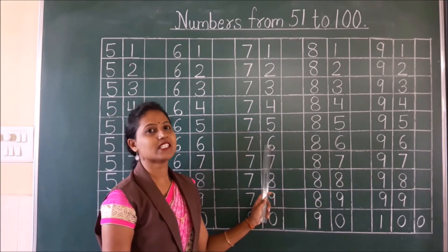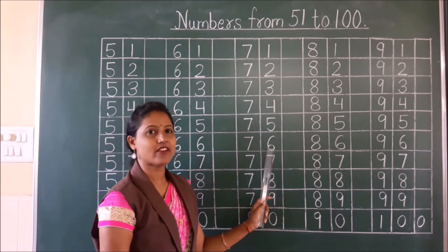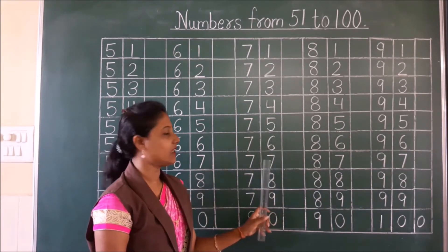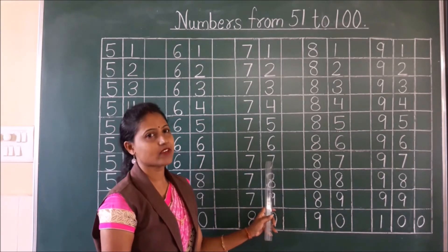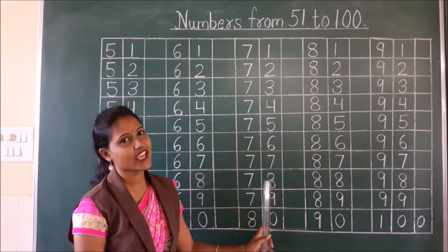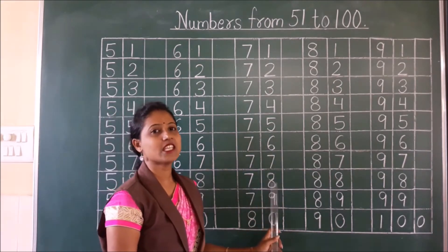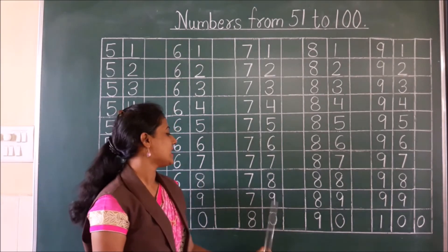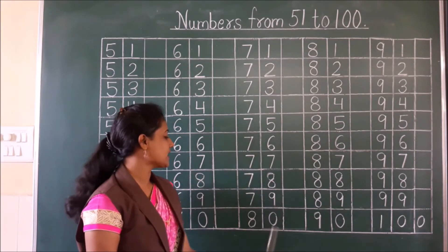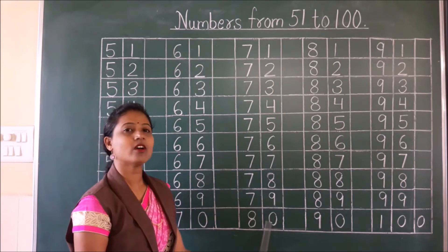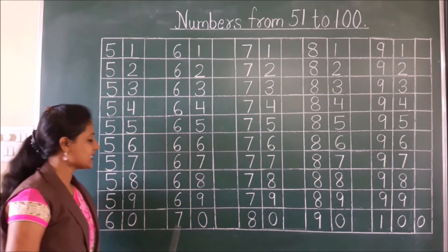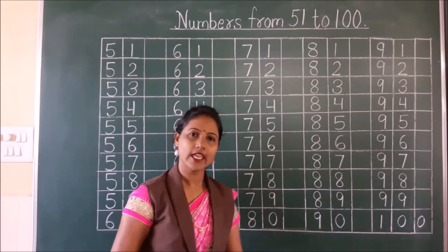76, 77. Then what will count here? 78, 79, 80. Let's check again: 60, 70, 80.